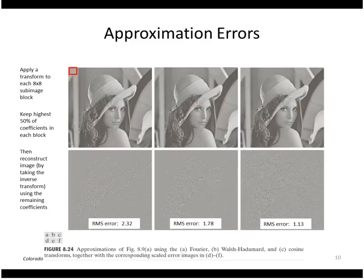This column is the result of applying the Fourier transform. The center column is the Walsh-Hadamard transform, and the right column is the discrete cosine transform. On this image, the discrete cosine transform yielded the smallest RMS error.